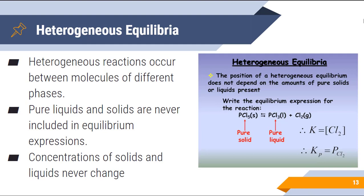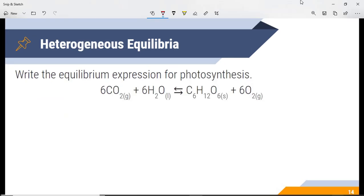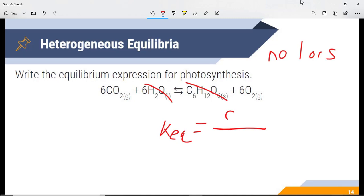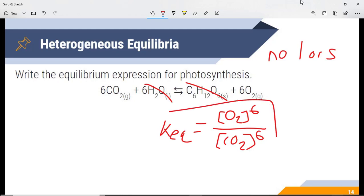One more practice problem and we are done. Let's write the equilibrium expression for photosynthesis. Remember, no liquids or solids — so we don't include water or glucose. We just write the equilibrium expression as we normally would: Keq equals products over reactants. Because there are six of a particular molecule, we take it to the power of six. If you were given values for O2 or CO2, you'd be able to plug those in and solve.